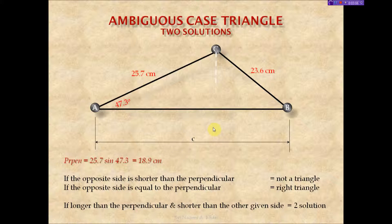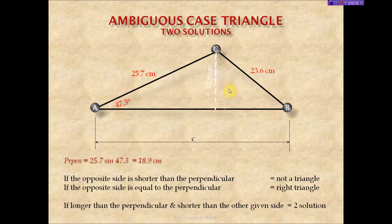If this side was shorter — say it was 15 rather than 23.6 — it would be shorter than the perpendicular, and this would not be a triangle because it's not closed. Now if this side happened to be exactly 18.9, then we would have a right triangle, and that would not result in an ambiguous case — you would just solve for that right triangle.